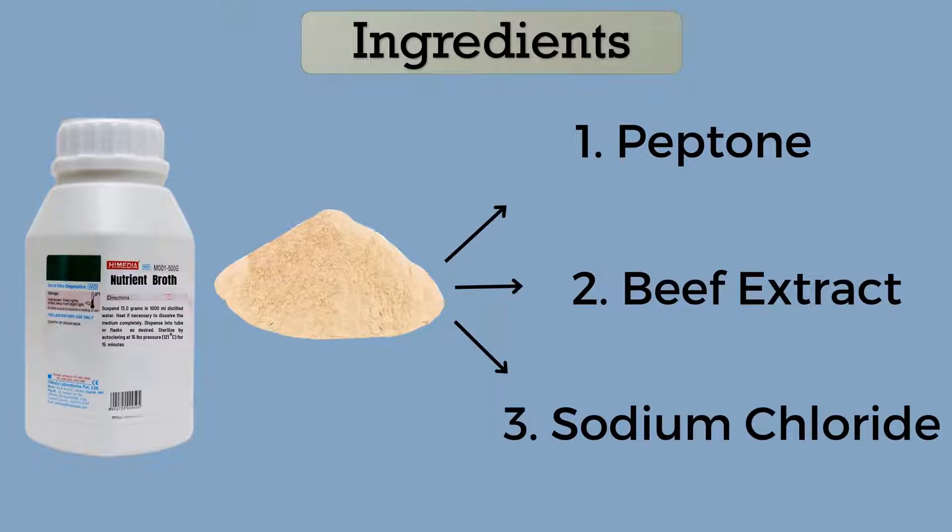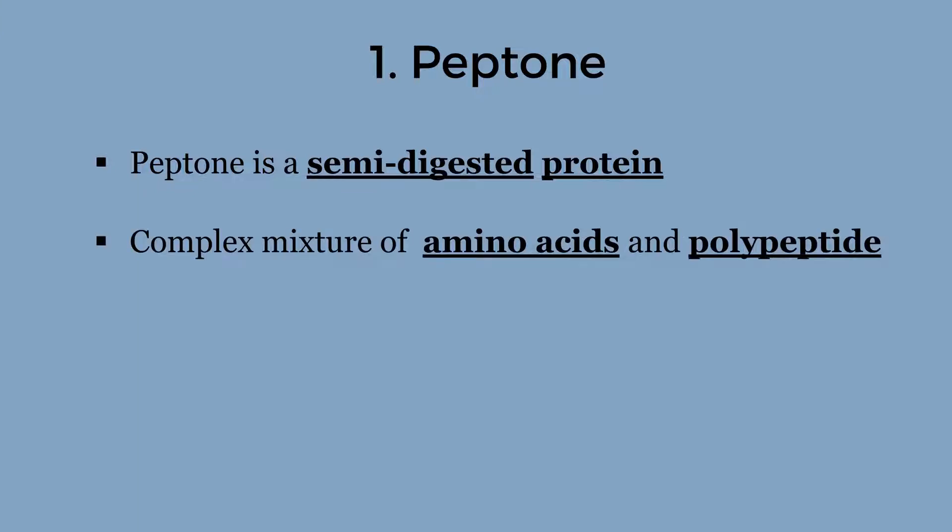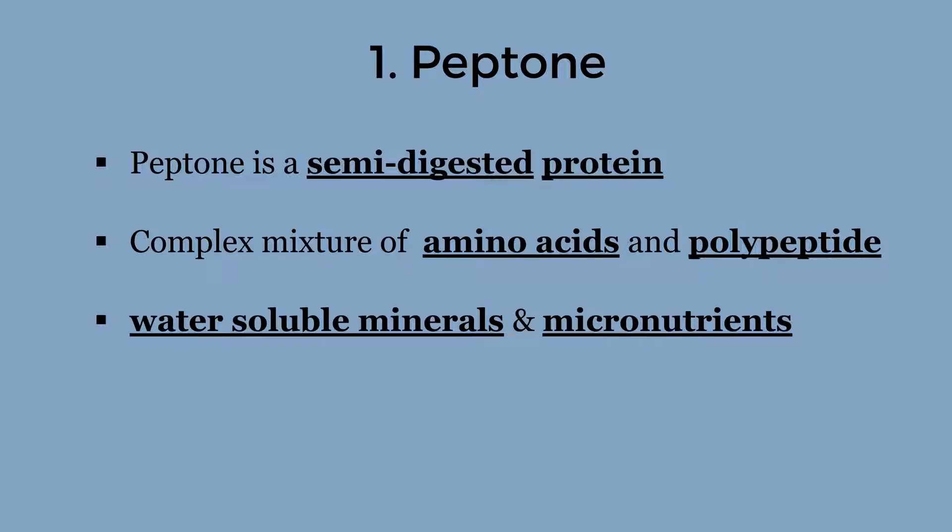The first ingredient present in the nutrient broth is peptone. Peptone is semi-digested protein. It is the product of protein hydrolysis. The peptone is a complex mixture of amino acids and polypeptides. It contains high concentration of water-soluble minerals and micronutrients. Most important, it is a rich source of organic nitrogen.